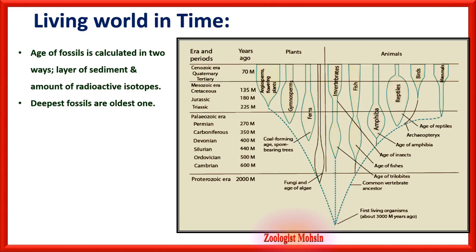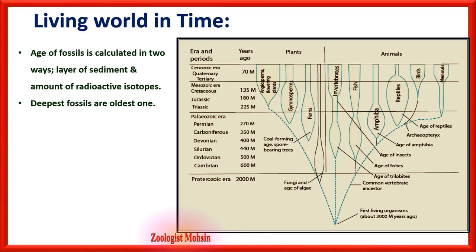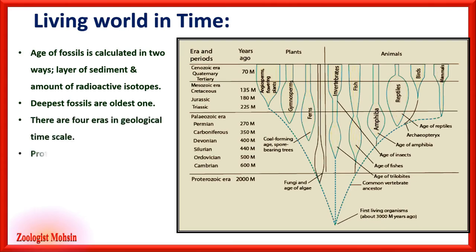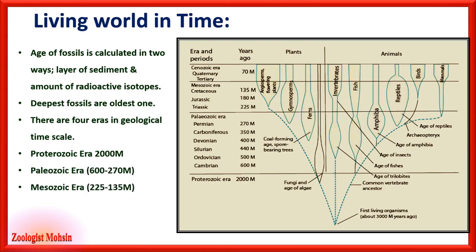Large bubbles in the diagram show huge diversity of organisms; when they become smaller, it indicates extinction reduced their variety. In the Proterozoic era, common vertebrate ancestors, fungi and algae ancestors, and the ancestor of all living things are predicted to have existed. Dotted lines show we have no fossil record of common ancestry. The four eras: Proterozoic (2000 mya), Paleozoic (600–270 mya), Mesozoic (225–135 mya), and Cenozoic (70 mya to date).